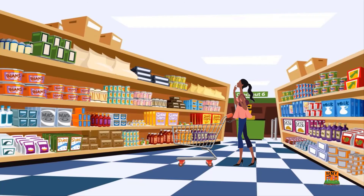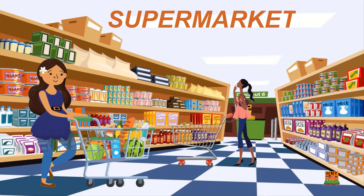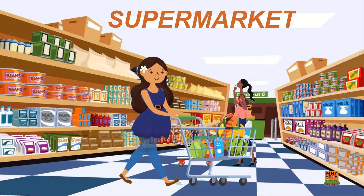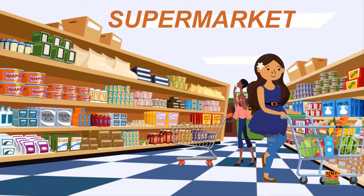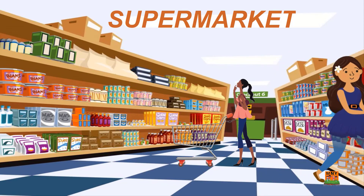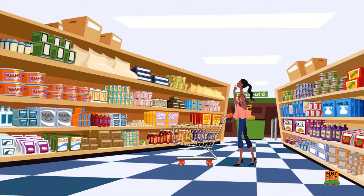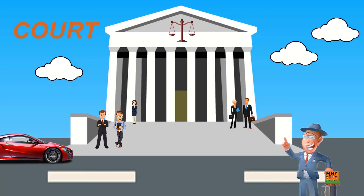This is the supermarket. We can buy groceries for our homes. This is the court. Here people come to solve their problems.